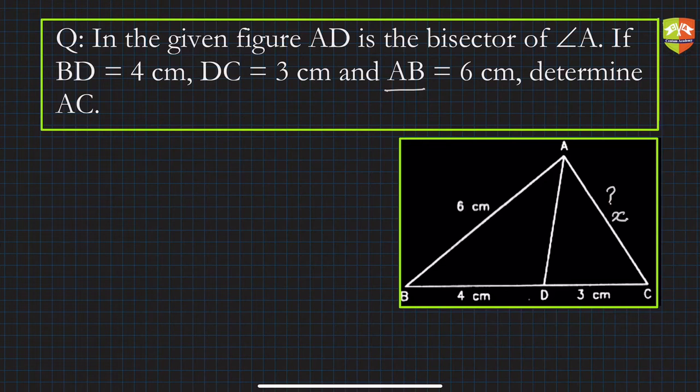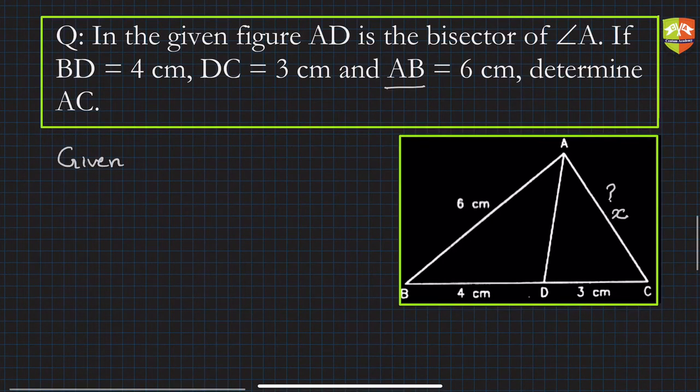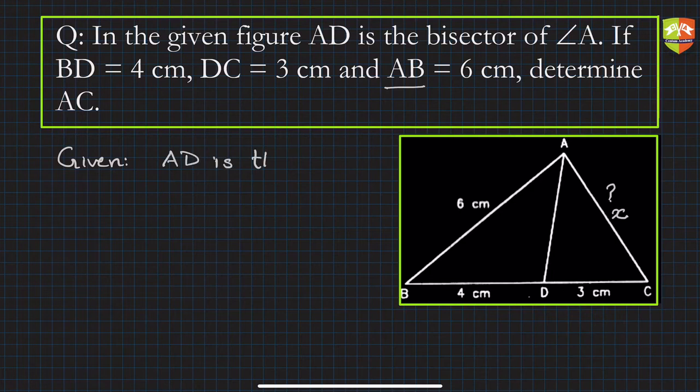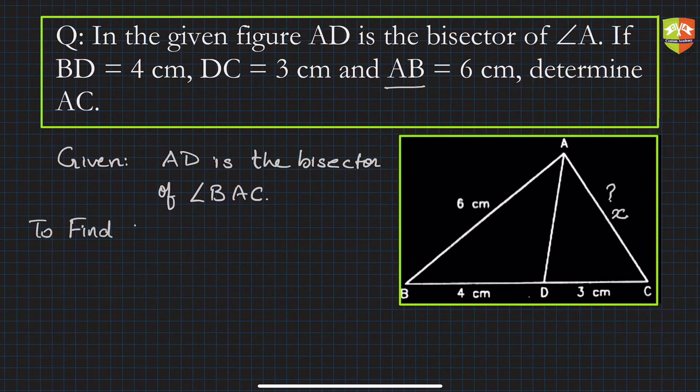So let's say AC's length is x. Let's do it methodically. Given is AD is the bisector of angle BAC. This is a good enough hint in terms of what exactly is to be done. To find AC, and I'm calling it x.